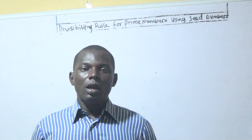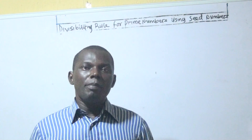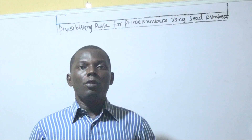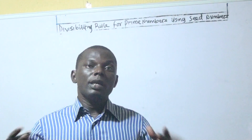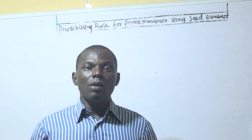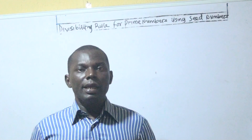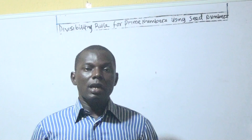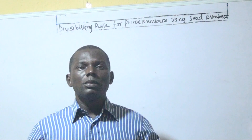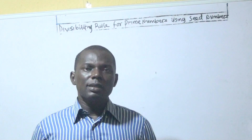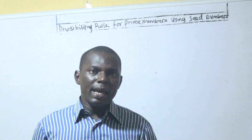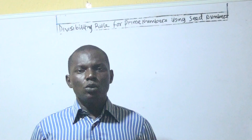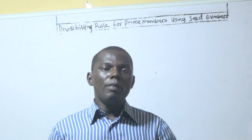The seed concept is based on the principle that every odd prime number usually gives a unit digit of either 1 or 9 in their first ten multiples. What this simply means is that there are occasions where you multiply an odd prime number and the result will end in 1 or 9. So our principle will be based on that.